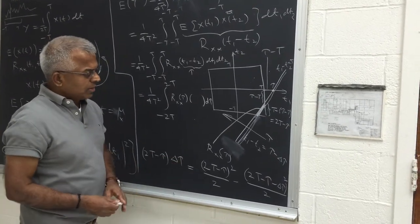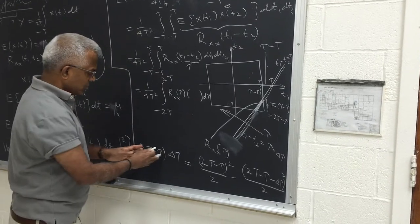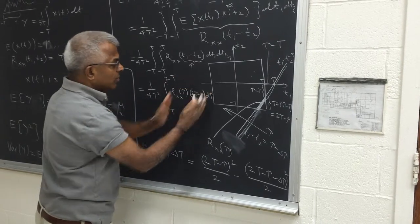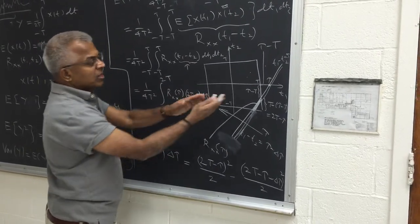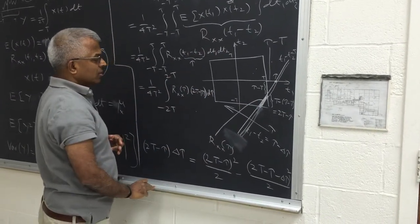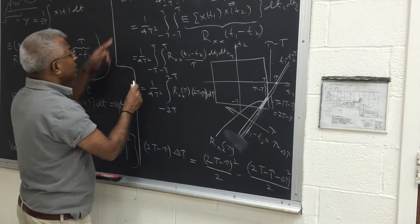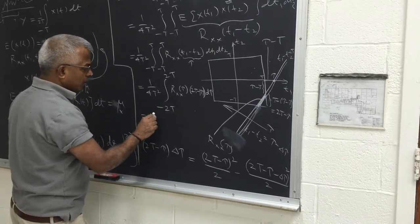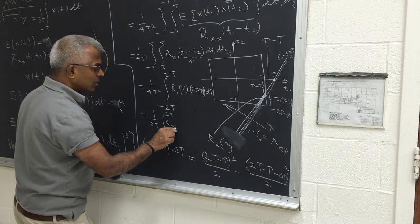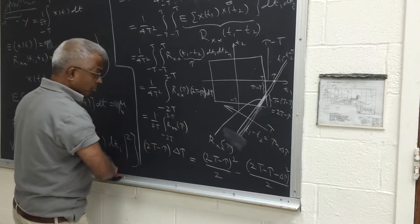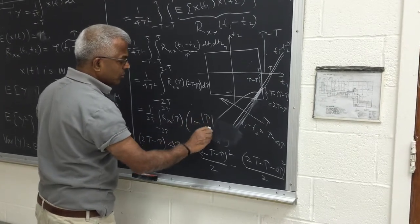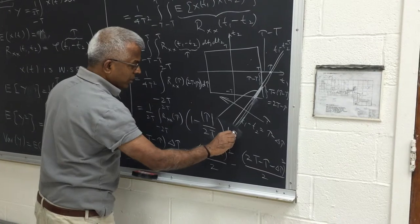So if you do this, you get the answer to be (2t minus τ) multiplied by δτ. Then there is a term involving δτ squared, and we assume that is negligible. So this is 2t minus τ. This is the quantity we should multiply. This argument will be the same whether the strip is on this side or the other side, so we can put an absolute value. So you can write the expected value of y squared to be 1 over 2t, integral from minus 2t to 2t, R_XX of τ multiplied by (1 minus |τ|/(2t)), dτ.